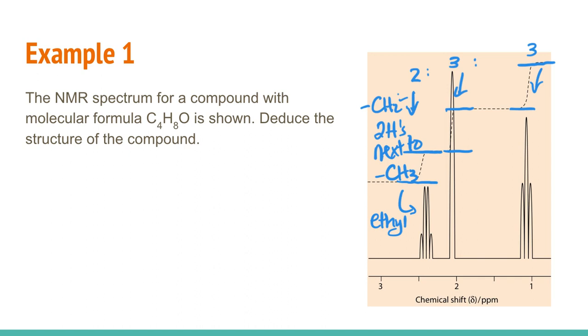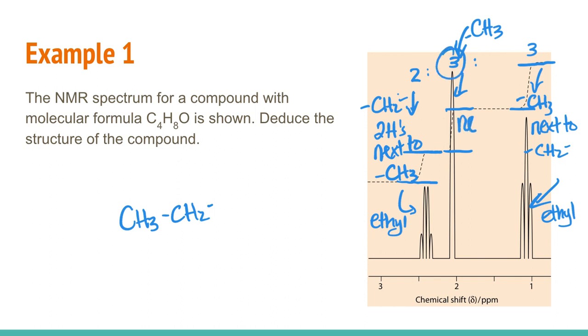If we look at the other one at the lowest end, that's three protons. So that's probably a CH3 group and it's split into three. So it's going to be next to a CH2 group. So those two peaks there hand in hand tell you that you've got an ethyl group somewhere. So we probably do have an ethyl group in this molecule.